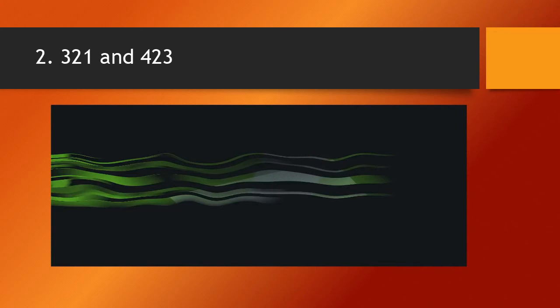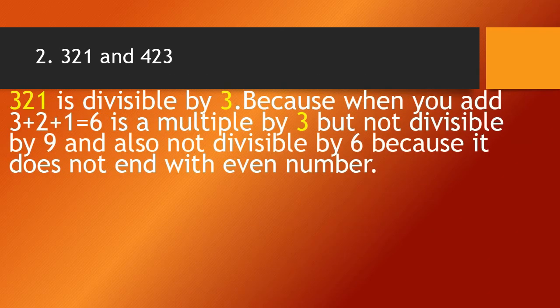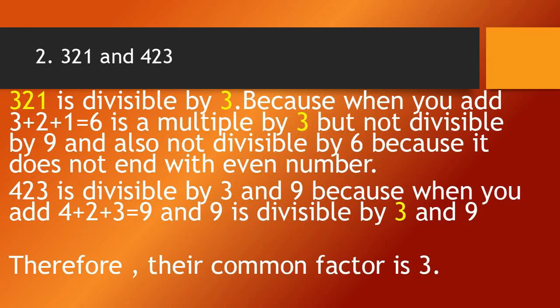Our second set of numbers: 321 and 423. Let's find the answer. 321 is divisible by 3 because 3 plus 2 plus 1 equals 6, and 6 is a multiple of 3, but not divisible by 9. And also not divisible by 6 because it does not end with an even number. Next, 423 is divisible by 3 and 9 because 4 plus 2 plus 3 equals 9, and 9 is divisible by 3 and 9. Therefore, their common factor is 3.